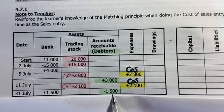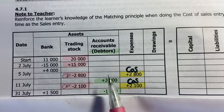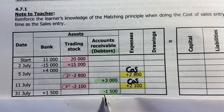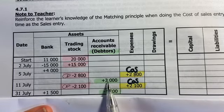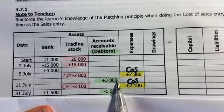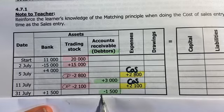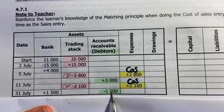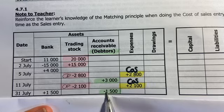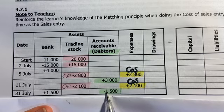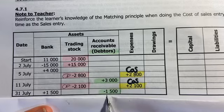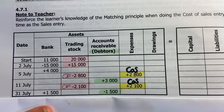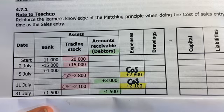For debtors, you can also use this table quite easily. On the 11th, the debtors bought something. On the 31st, they came back and paid you, so that will be minused. That will give you the total that that person owes you for the month.